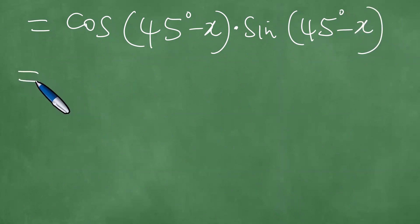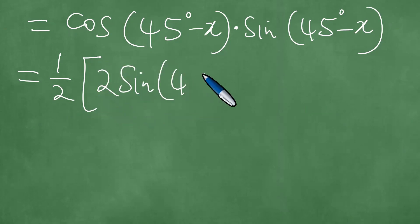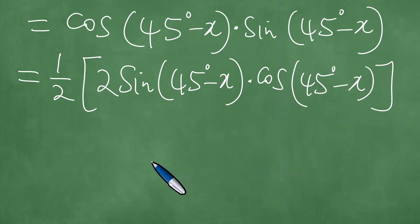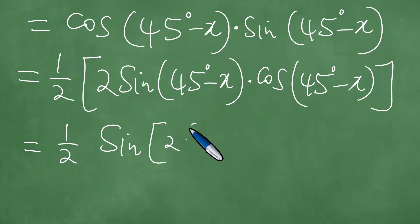Now, what is the meaning of this? We can clearly see therefore that this can be written as 1 over 2, into 2 times the sine of 45 degrees minus x, multiplied by the cosine of 45 degrees minus x. Now, 2 times the sine of 45 degrees minus x, times the cosine of 45 degrees minus x, is the same as the sine of 2 into 45 degrees minus x.